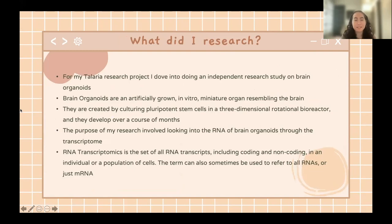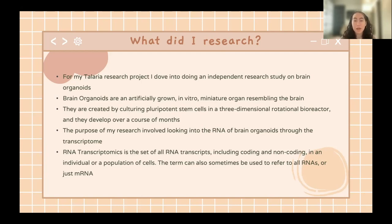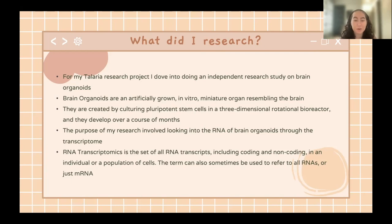For my research project, I dove into an independent research study on brain organoids. Brain organoids are artificially grown, in vitro miniature organs resembling the brain. They are created by culturing pluripotent stem cells into three-dimensional rotational bioreactors and develop over the course of months. My research involved looking into the RNA of brain organoids through the transcriptome. RNA transcriptomics is the set of all RNA transcripts — including coding and non-coding — in an individual or population of cells.